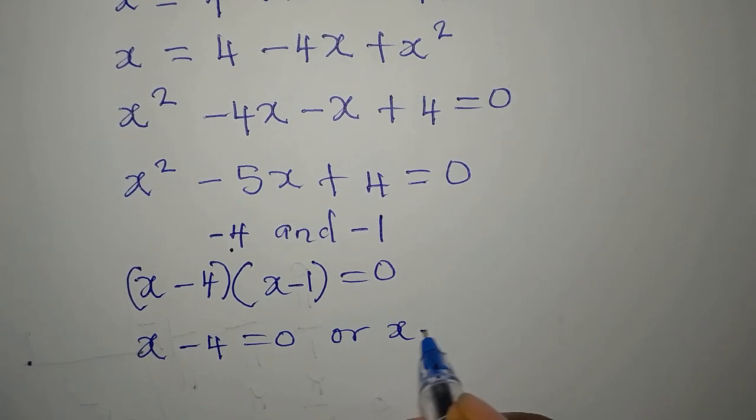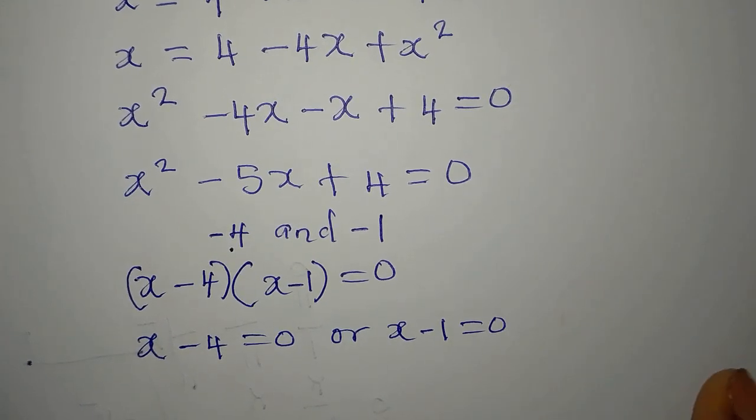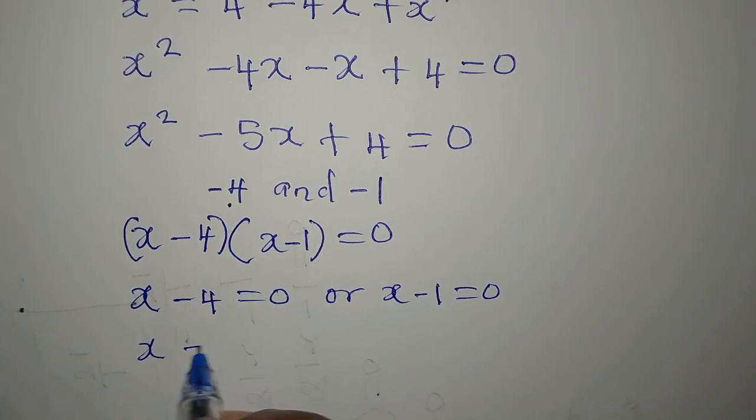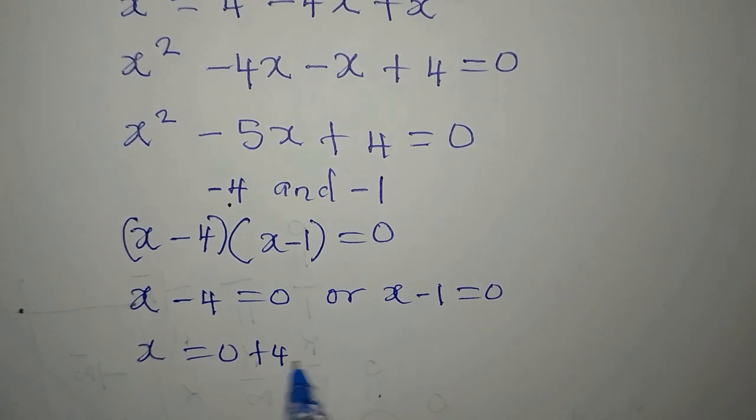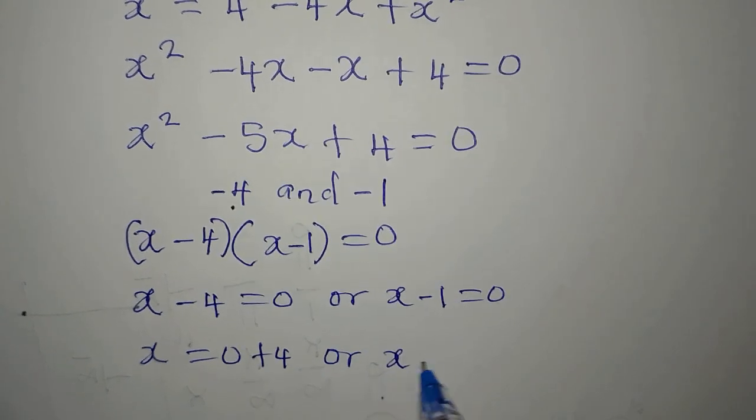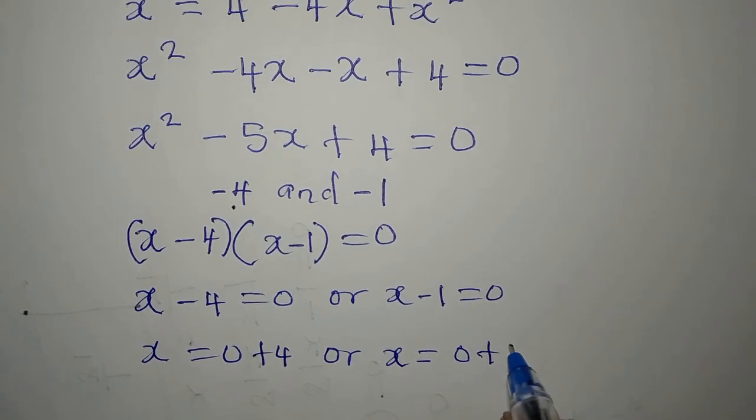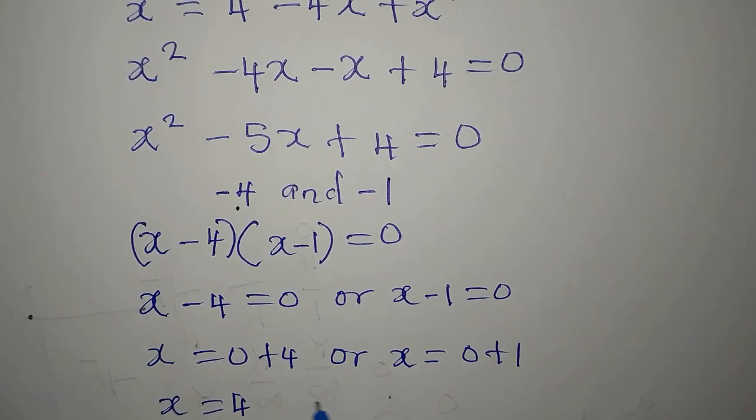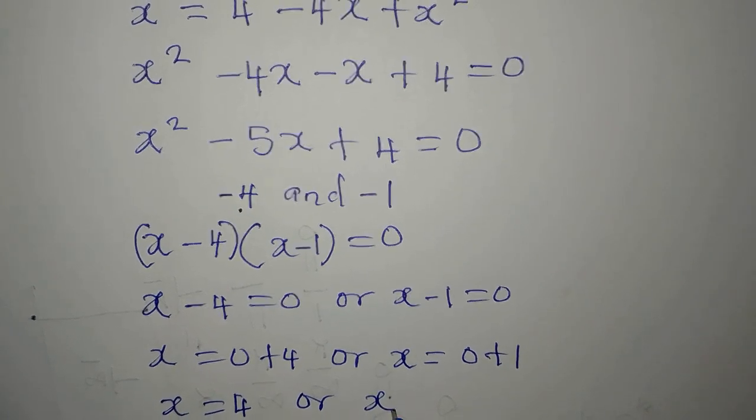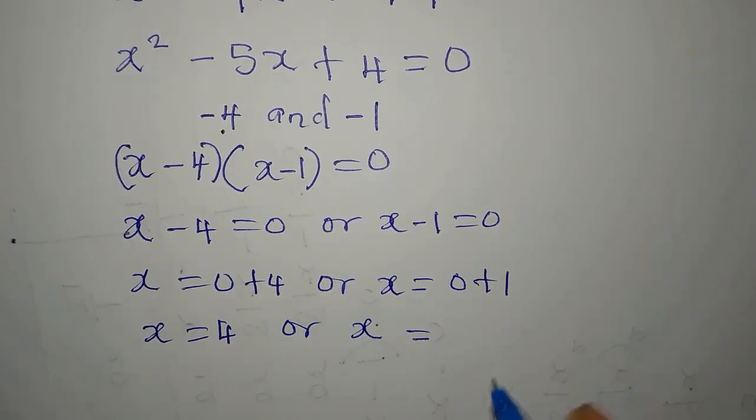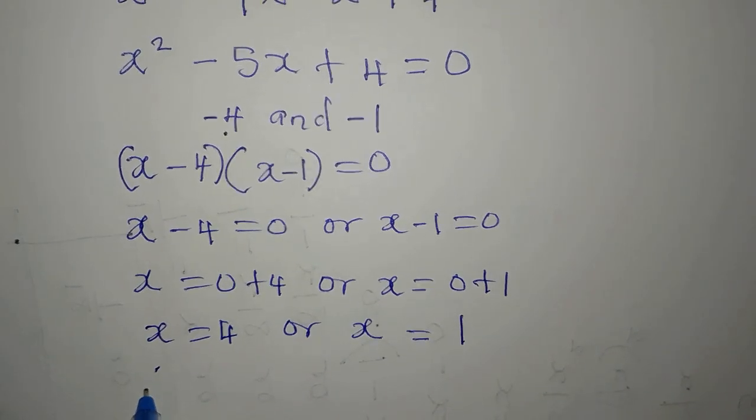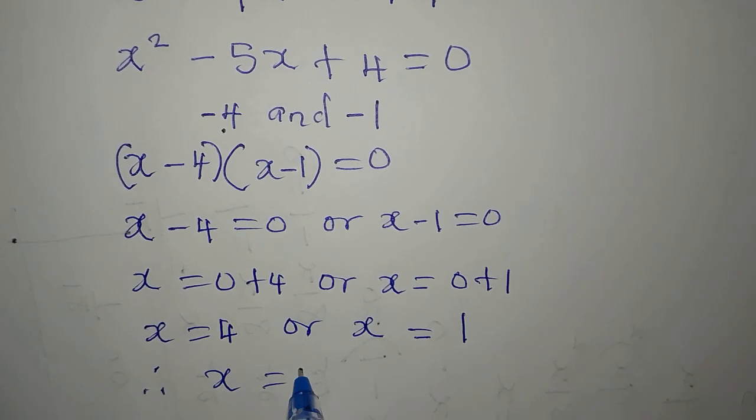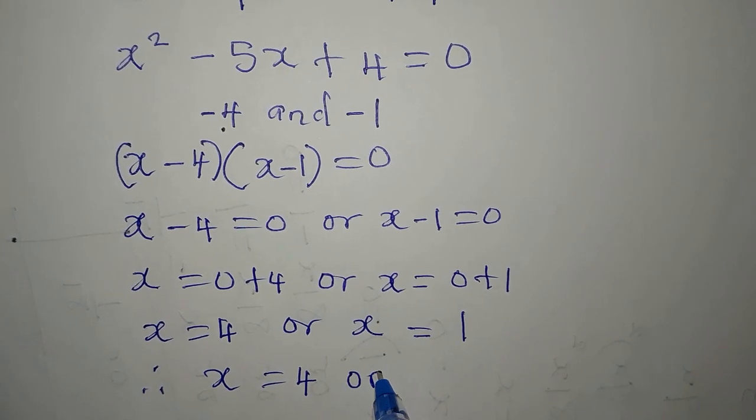From here our x is 0 plus 4, or x is equal to 0 plus 1. x is equal to 4, or our x is equal to 1. Therefore x is equal to 4 or 1.